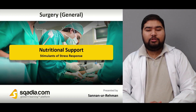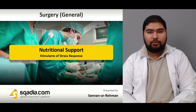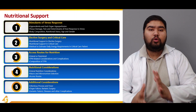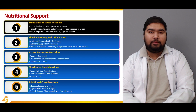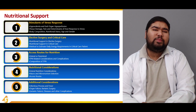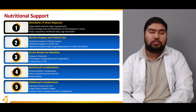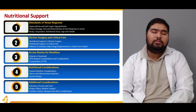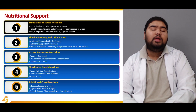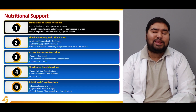We're talking about nutritional support. This is the first section of this presentation in which we'll talk about the stimulants of the stress response. The stimulants we are going to talk about include hypovolemia or end-organ hyperperfusion, tissue damage, pain, and determinants of host response to stress.